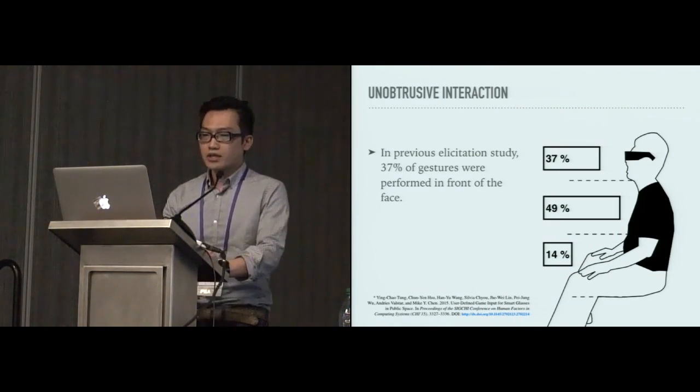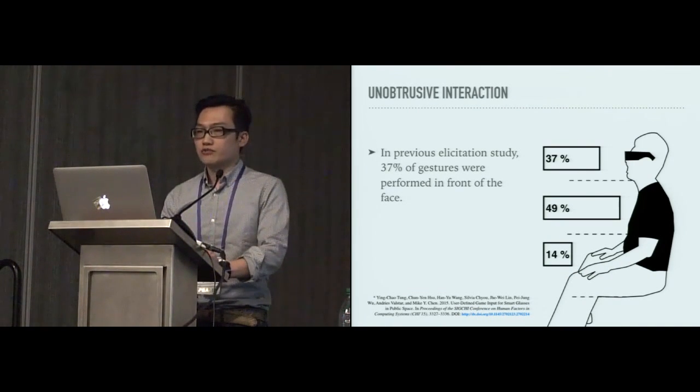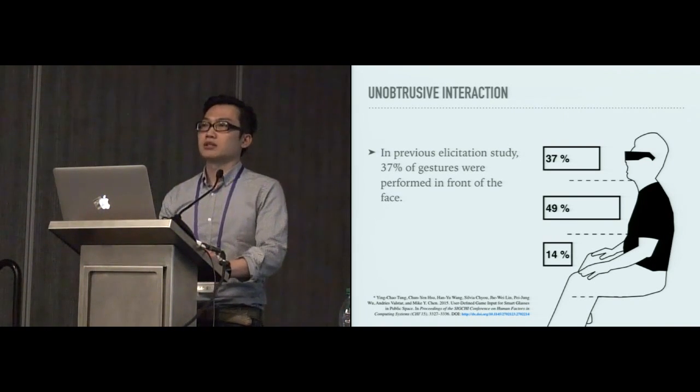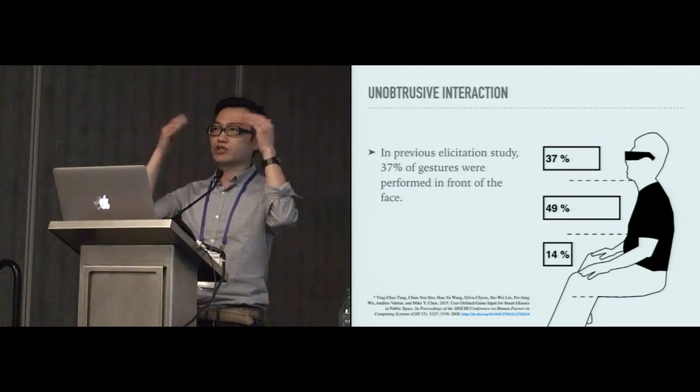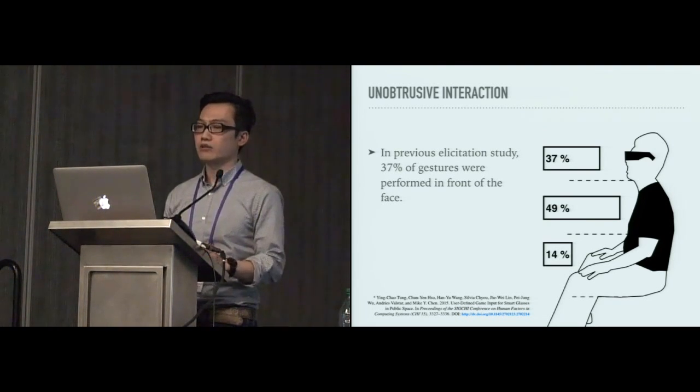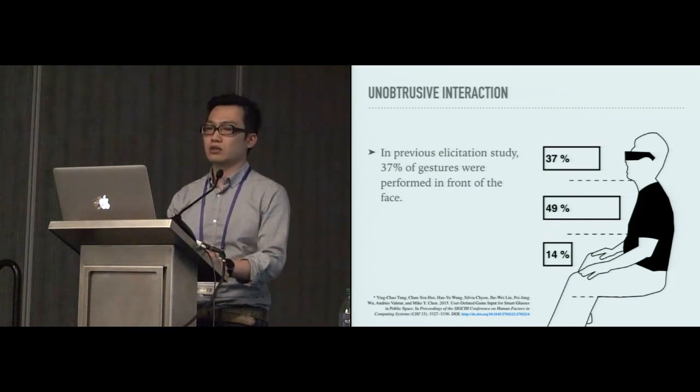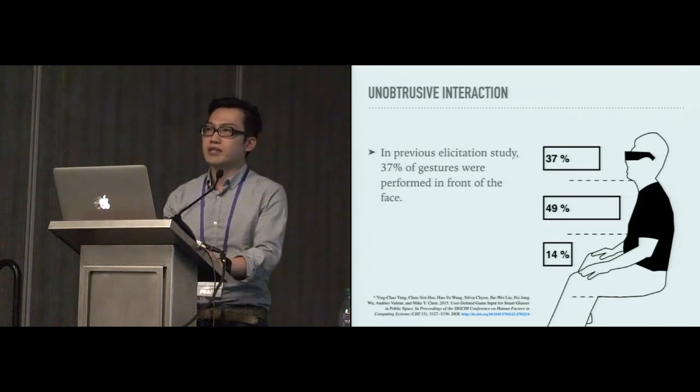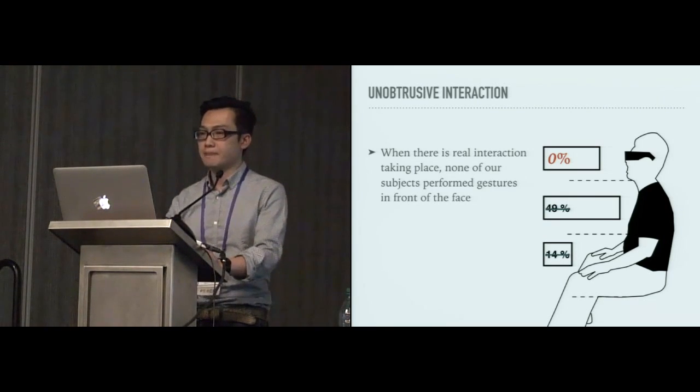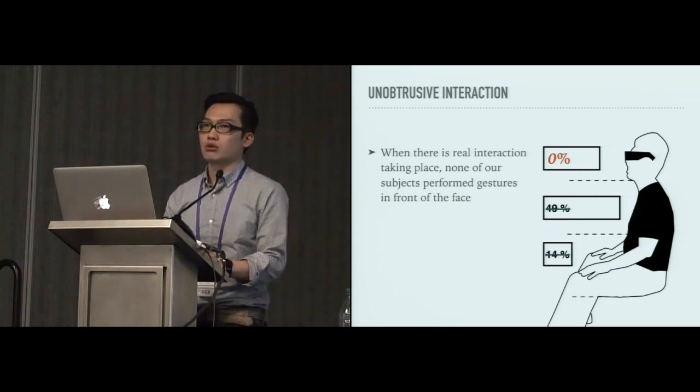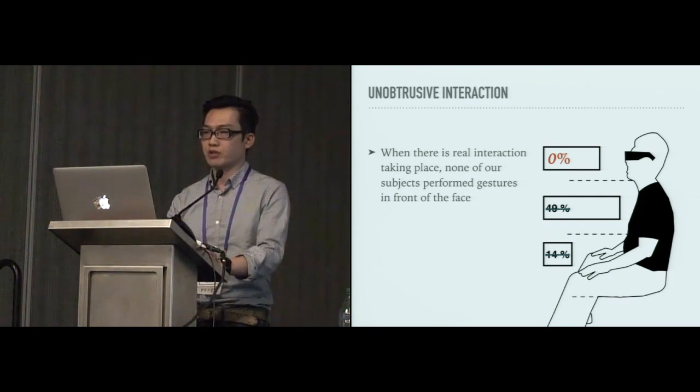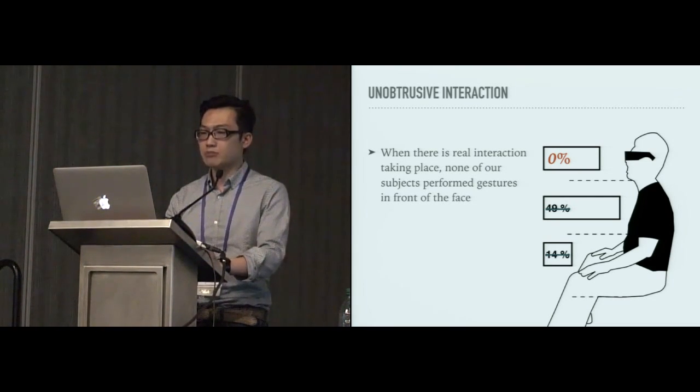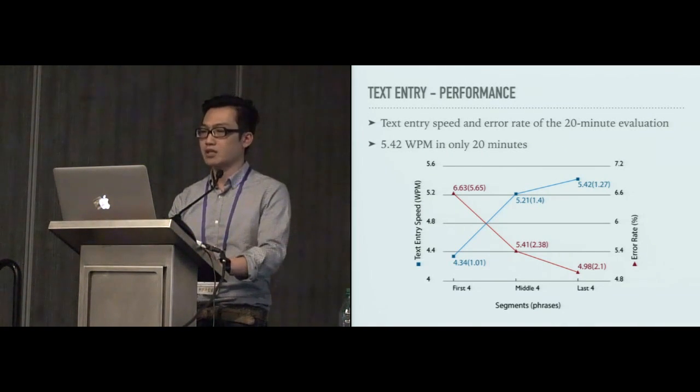So the next one is we achieved this unobtrusive interaction. In an earlier elicitation study where the subjects see an animation of visual interface in front of the eyes, and they invent or create their own hand gestures to correspond to this visual interface. And in the study, they found that 37% of hand gestures were performed in front of the face. But in our study, when there's actual and real interaction happening, none of our subjects performed just in front of the face, especially in public space. And the subjects were able to complete the task in an unobtrusive manner by keeping post low.